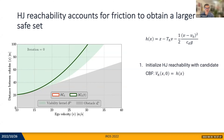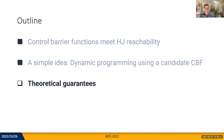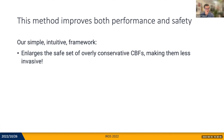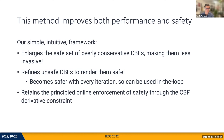To recover a less conservative CBF, we do the following: we first initialize HJ reachability with the candidate CBF and then apply dynamic programming until convergence, as you can see on the left. So now we can maintain our desired velocity for longer before we are forced to brake — we've increased performance while retaining safety. Our simple intuitive framework enlarges the safe set of overly conservative CBFs, refines unsafe CBFs to render them safe, and this is safety with every iteration, so we argue it can be used in the loop. It retains principled online enforcement of safety for the CBF derivative constructs, all with theoretical guarantees. I encourage you to check out the paper.